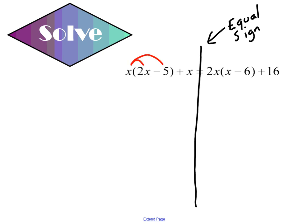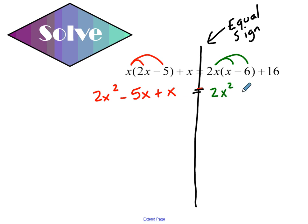I have x times 2x is going to be 2x squared. x times negative 5 is negative 5x. I also have that plus x on my left-hand side. I want to also distribute on my right-hand side: 2x times x is going to be 2x squared, and 2x times negative 6 is negative 12x, plus 16. On the left-hand side I have like terms: negative 5x plus x is negative 4x. So I have 2x squared minus 4x on the left.